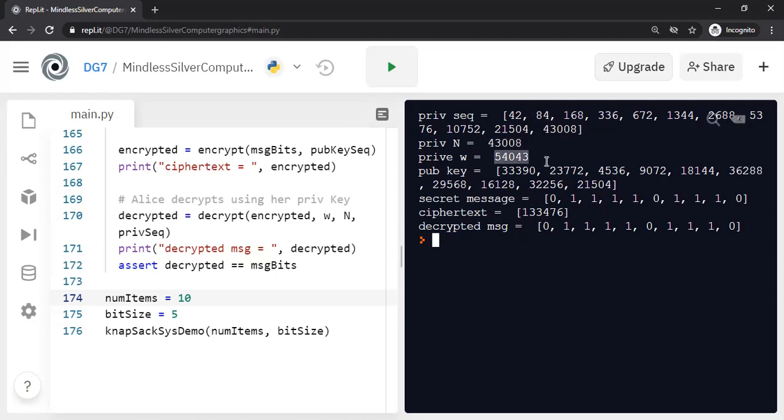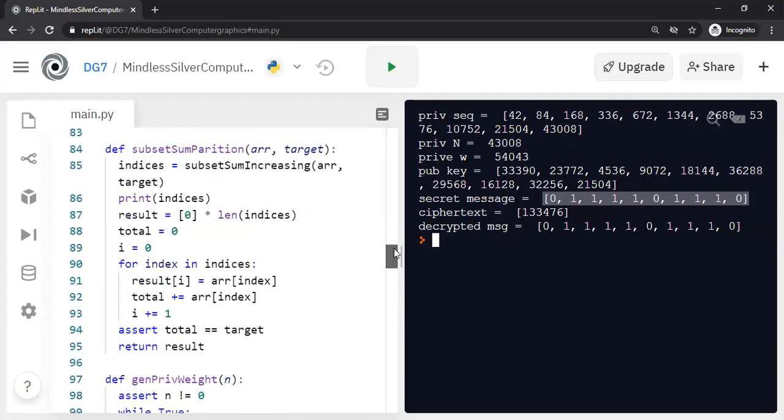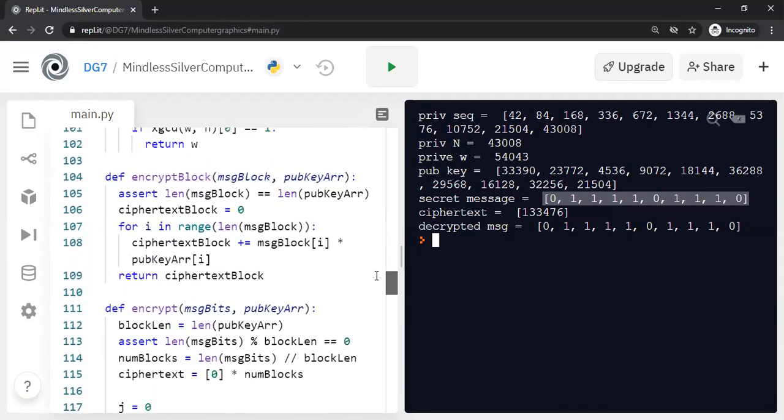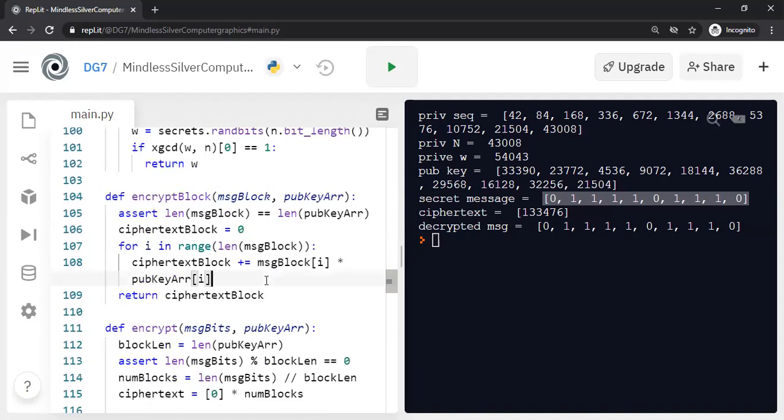So basically, here is the private sequence, super increasing sequence. And I will take the last element of private sequence as the capital N. And I need a w which is relatively prime to n. And the public key is basically computed by applying the transformation, trapdoor transformation or trapdoor function that we talked about. So Alice will publish this public key to the world. If Bob wants to send this secret message, binary message, also made of 10 bits, Bob will apply the encryption function.